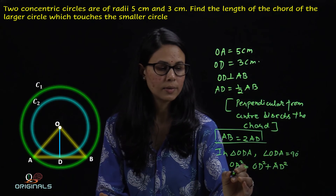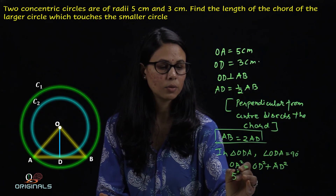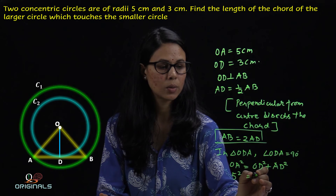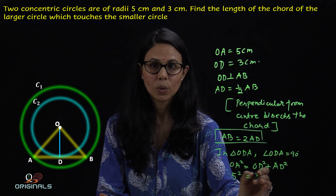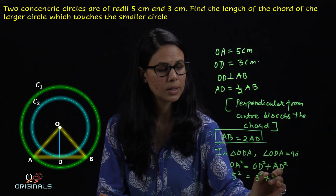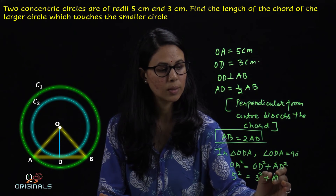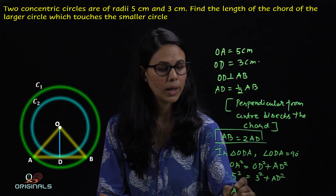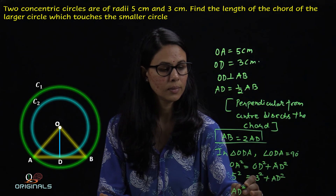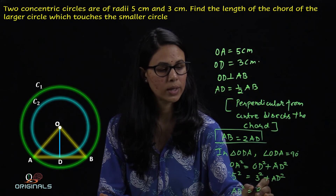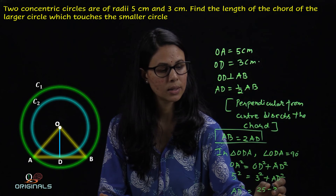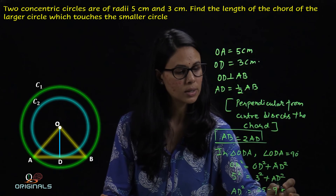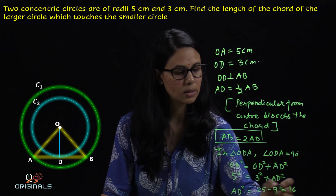अब यहाँ पर हम Pythagoras theorem apply करेंगे: OA² = OD² + AD². OA कितना है? 5 cm. तो 5² = 3² + AD². तो AD² = 25 − 9, which is 16.